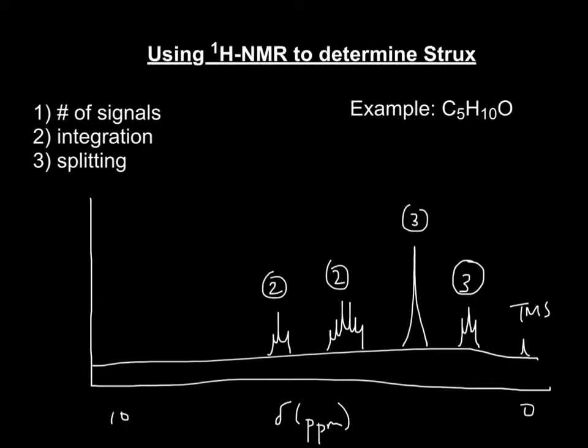Hello. So now I'm going to do a quick tutorial using another example of how to determine the structure of a compound, ideally at least, using proton NMR. And in particular, the example I'm going to use here, we're given the chemical formula C5H10O.